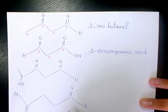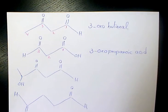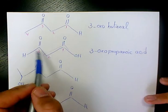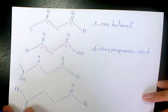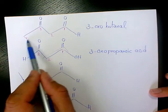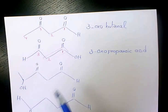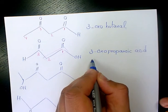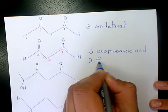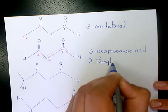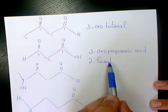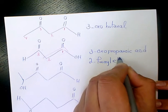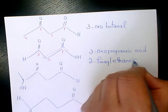There is also an alternative name for this compound. We can consider the two-carbon chain as the main chain and treat the aldehyde as a substituent called 'formyl'. Whenever aldehyde acts as a substituent we call it formyl, so the alternative name is 2-formylethanoic acid.